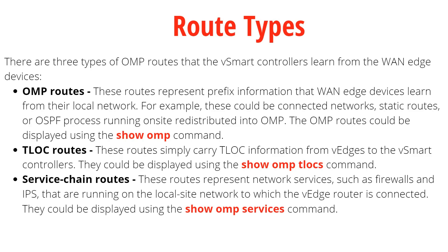The third route type is service chain routes. Cisco SD-WAN has the capability to add a firewall or intrusion prevention system — which can be Cisco, Palo Alto, Checkpoint, FortiGate, or anything else — physically at any location and do virtual routing, so that traffic between two sites passes through that firewall. You can have virtual firewalls or physical firewalls — that is called service chaining. If you've done Cisco ACI, you'll understand it more.